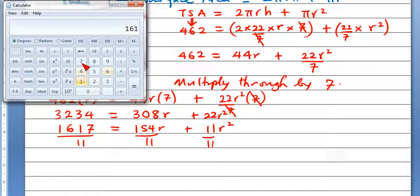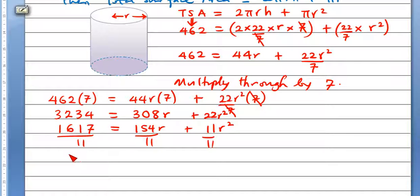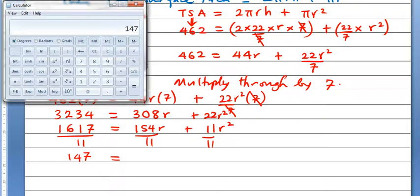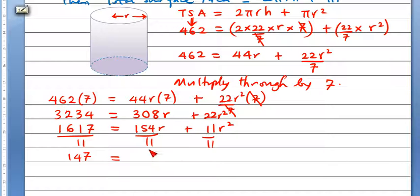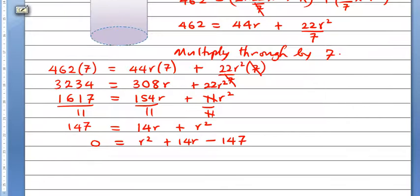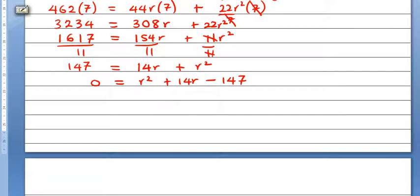1617 divided by 11. 147 is equal to 154 by 11 is 14 r. This 11 cancels, so that if we turn it into a quadratic equation, we have r square plus 14 r minus 147. This is now a quadratic equation.